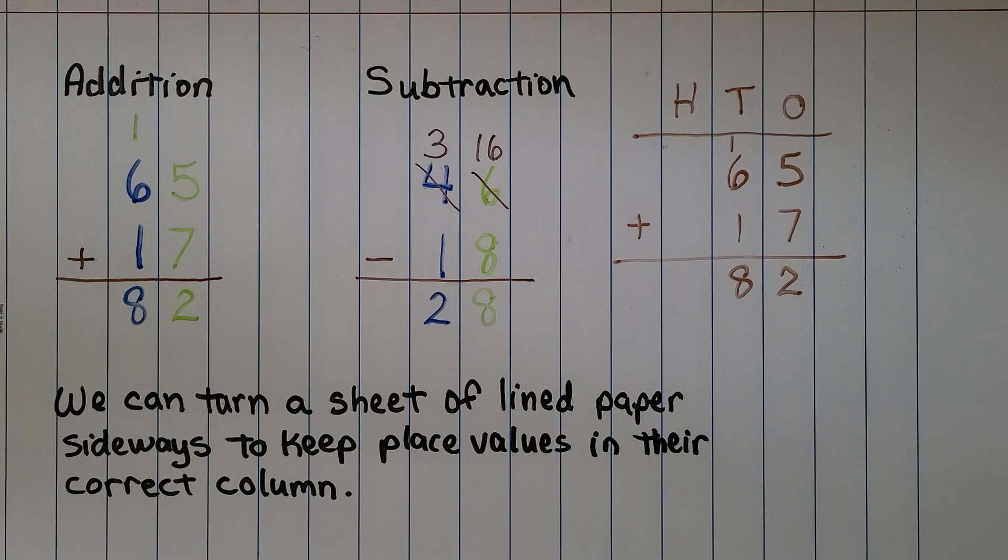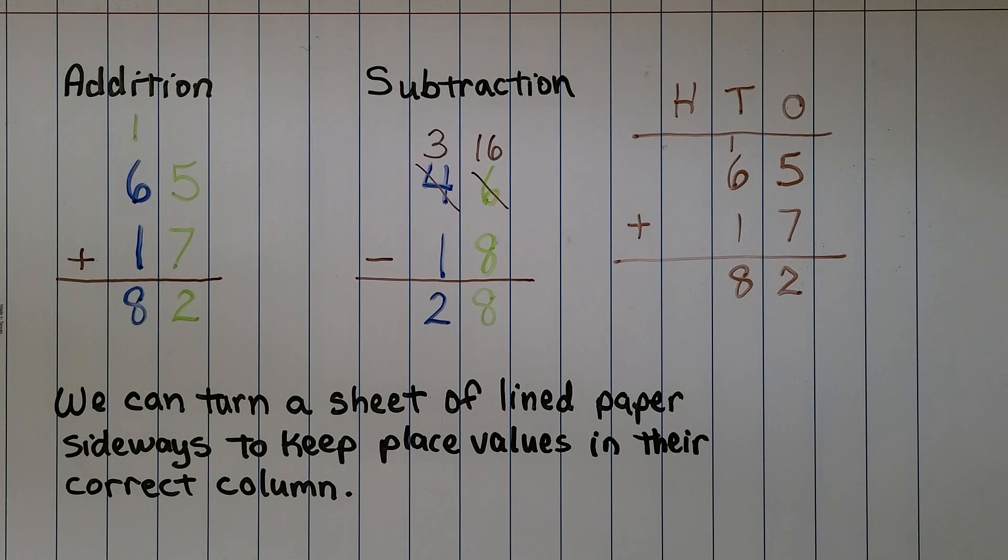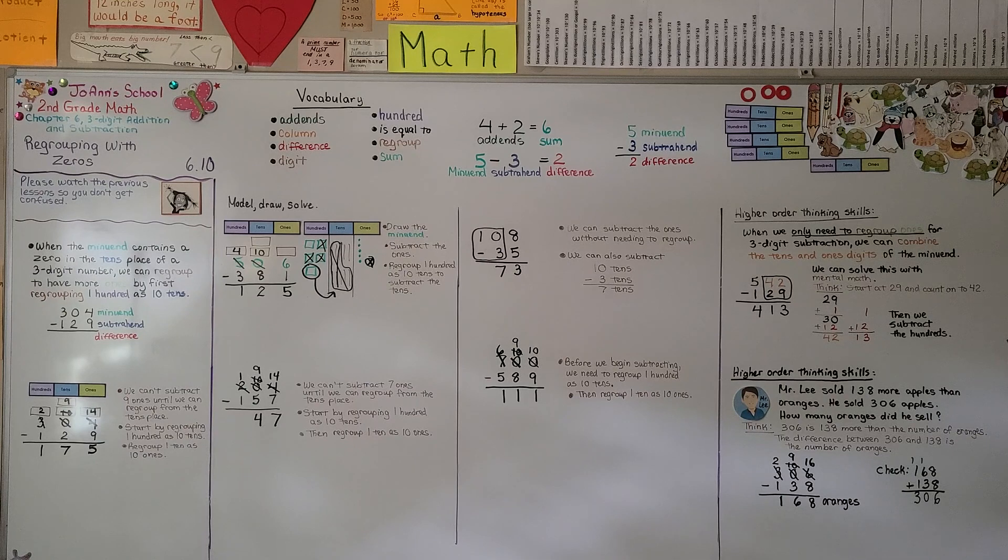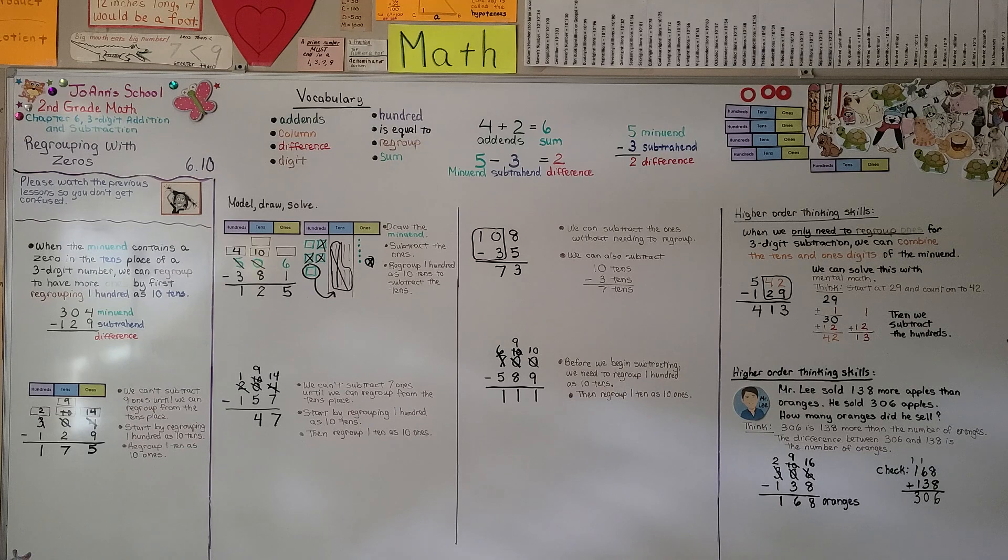Remember we can turn a sheet of lined paper sideways to keep place values in their correct column. Our next lesson is going to be chapter 7 all about money. And if you like counting money, you're going to like chapter 7. 7.1, we're going to talk about counting dimes, nickels, and pennies for U.S. coins. Have a wonderful day and I hope you'll join me next time. Bye.